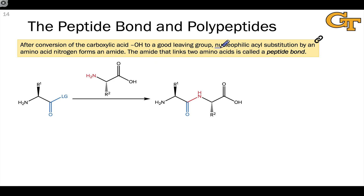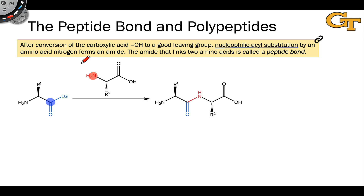Let's talk about what happens when the amino group of an amino acid engages in nucleophilic acyl substitution with an activated carboxylic acid of another amino acid. In this situation, the carbonyl group that's activated can act as an electrophile and the amino group as nucleophile, and nucleophilic acyl substitution results in the formation of an amide.